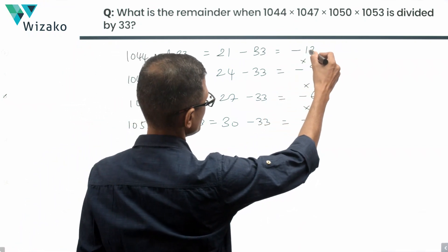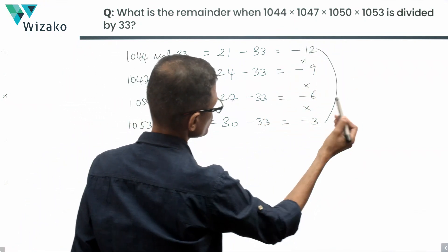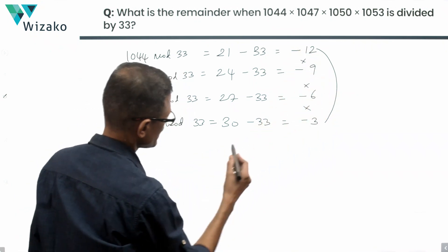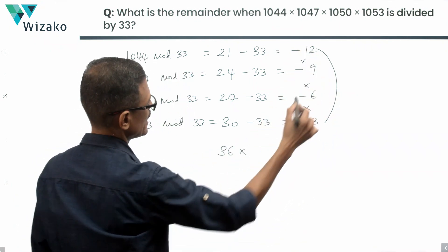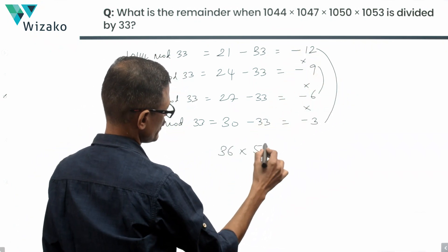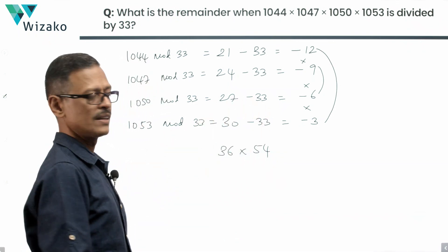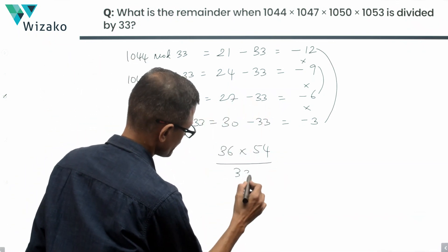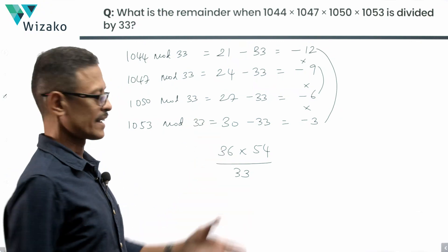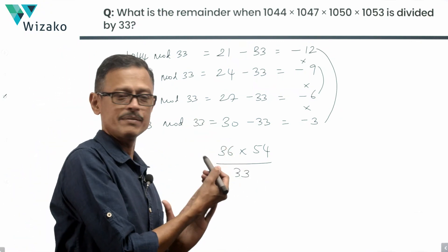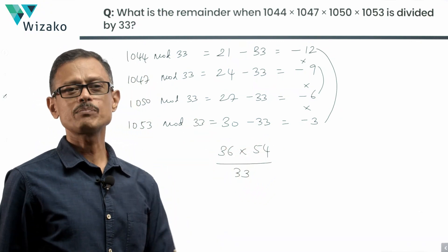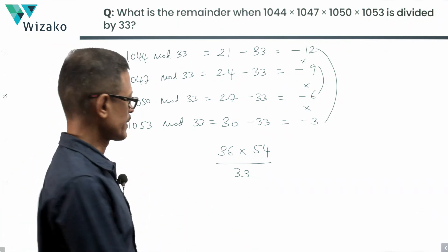I'll do things which will make my calculation easy. Minus 12 times minus 3 is 36, and minus 6 times minus 9 is 54. This is our remainder. We can iteratively find 36 by 33, find the remainder, and 54 by 33, find the remainder. That product will give us the final remainder.